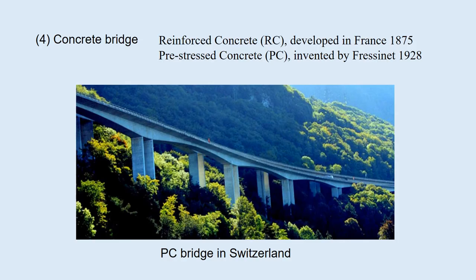Fourth, concrete bridges. Concrete is also a major material for modern bridges. There are two kinds: reinforced concrete bridge (RC), which was developed in France, and prestressed concrete bridge (PC), invented by Freyssinet in 1928. This is a PC bridge in Switzerland.